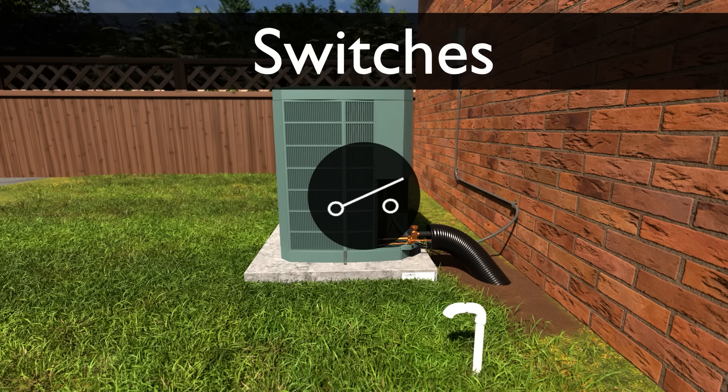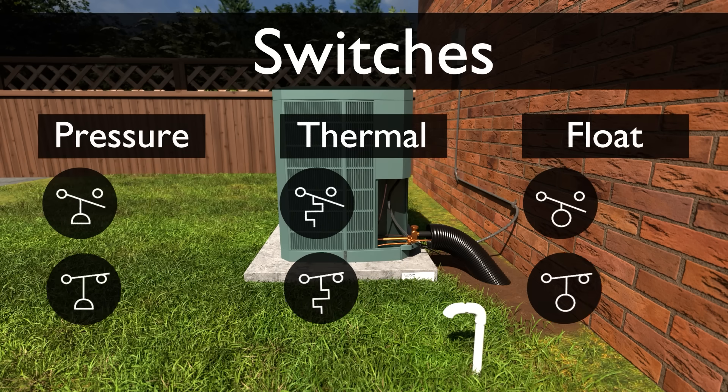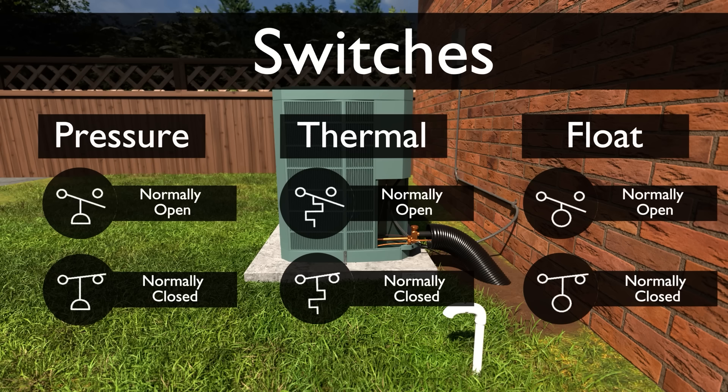First, let's talk about switches. This is a symbol for a simple electrical switch shown in the normally open position. You can see the difference between normally open and normally closed switches are shown in the powered off position in the equipment. Here we show some pressure switches, thermal switches or heat activated switches, and float switches.